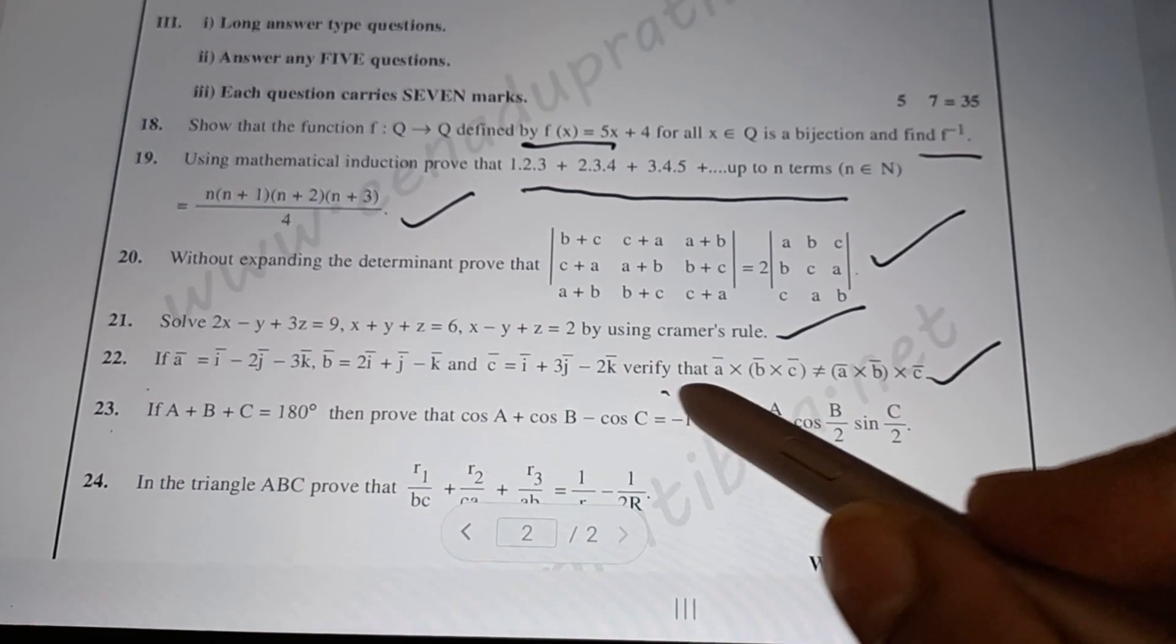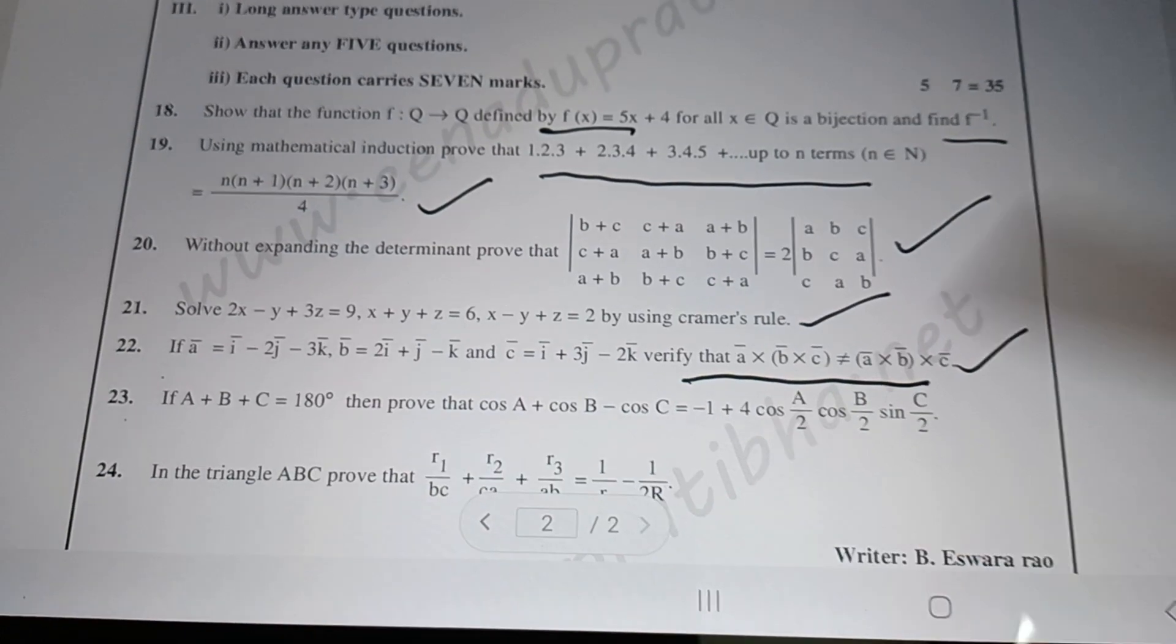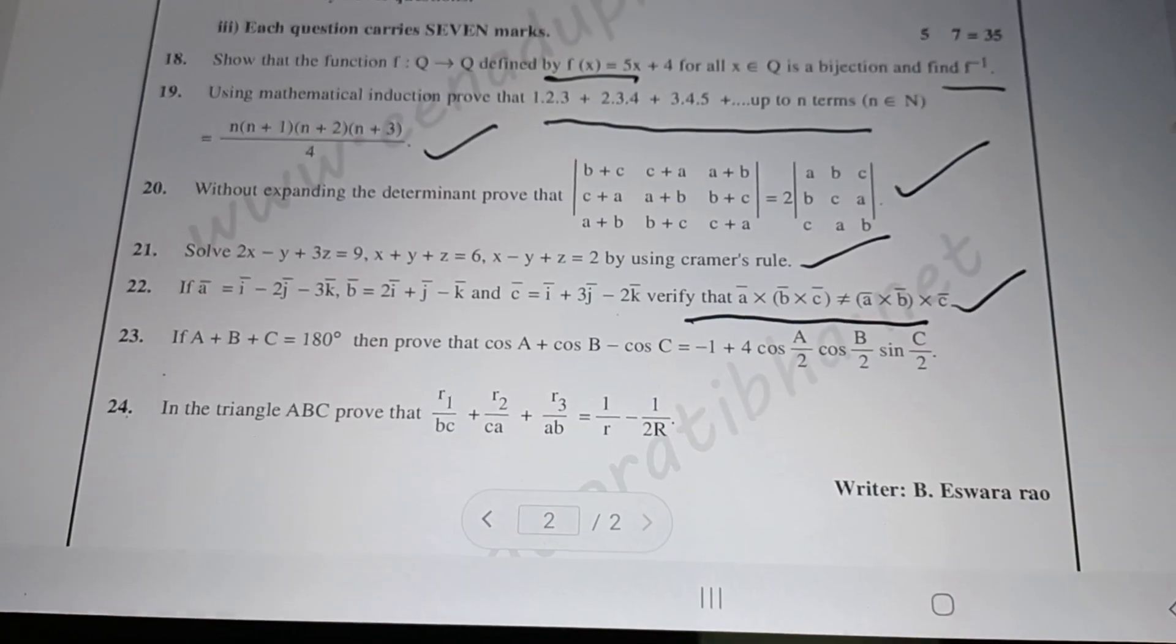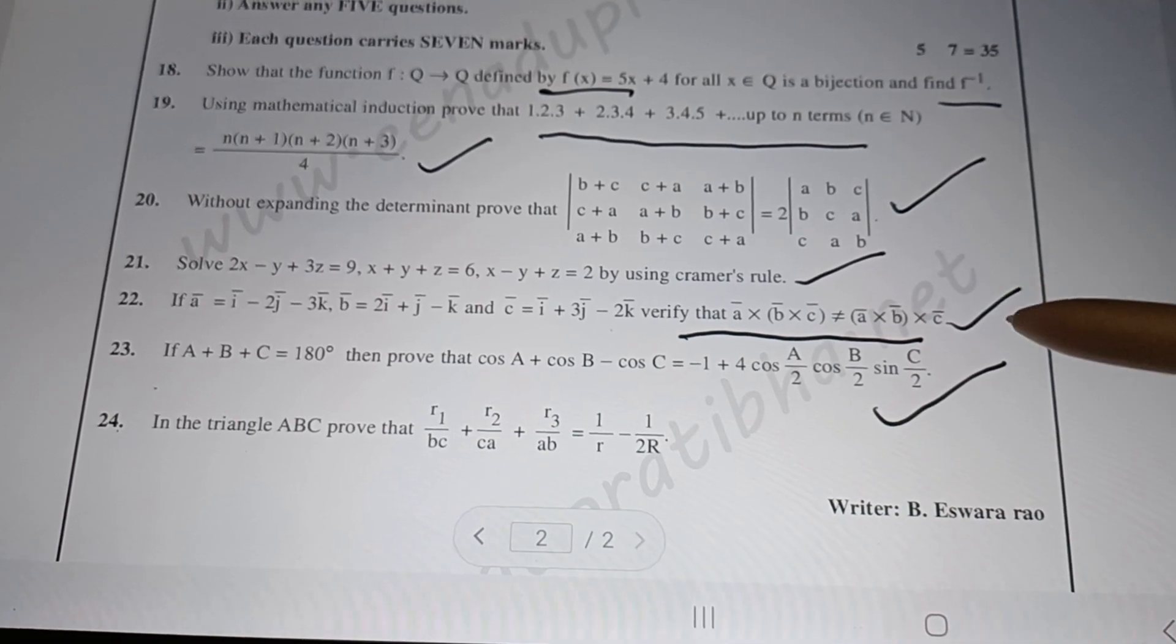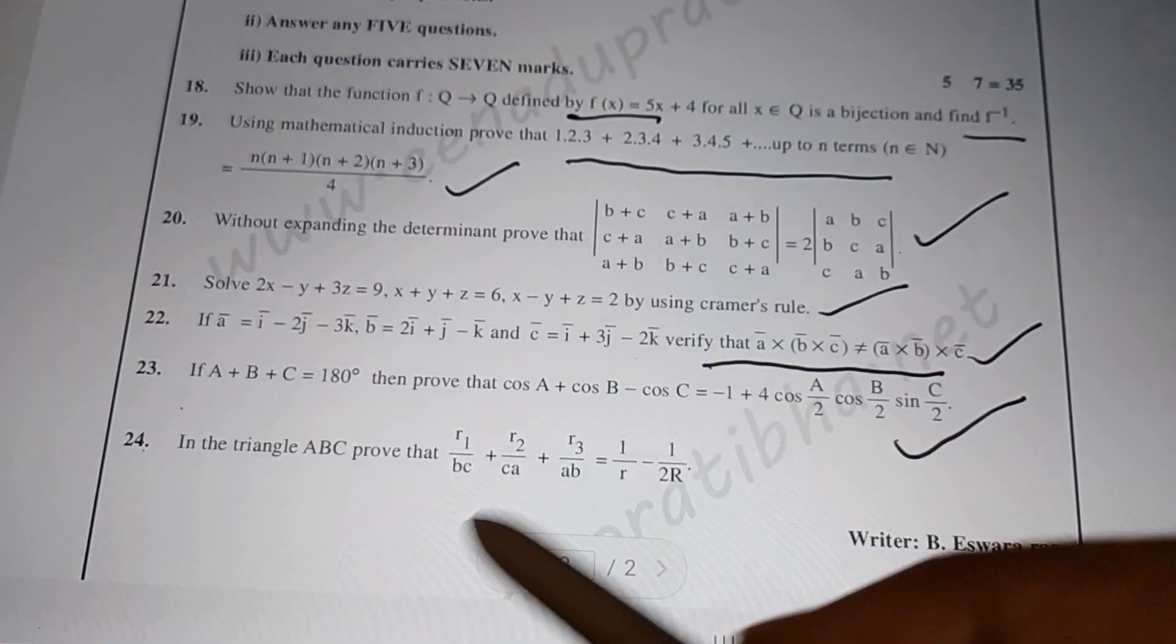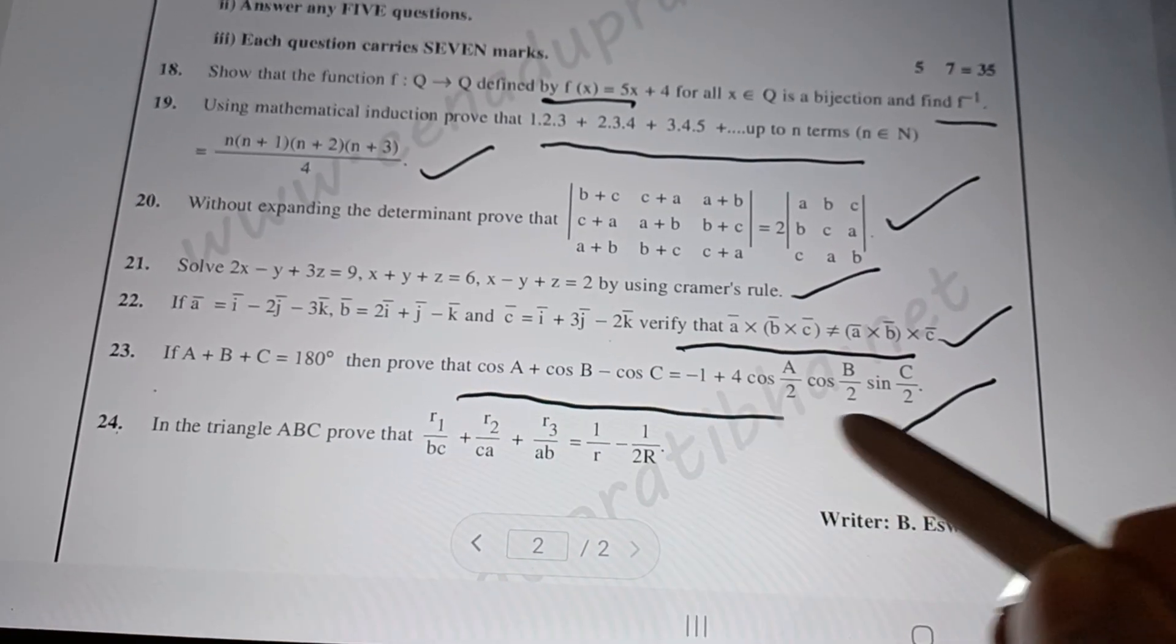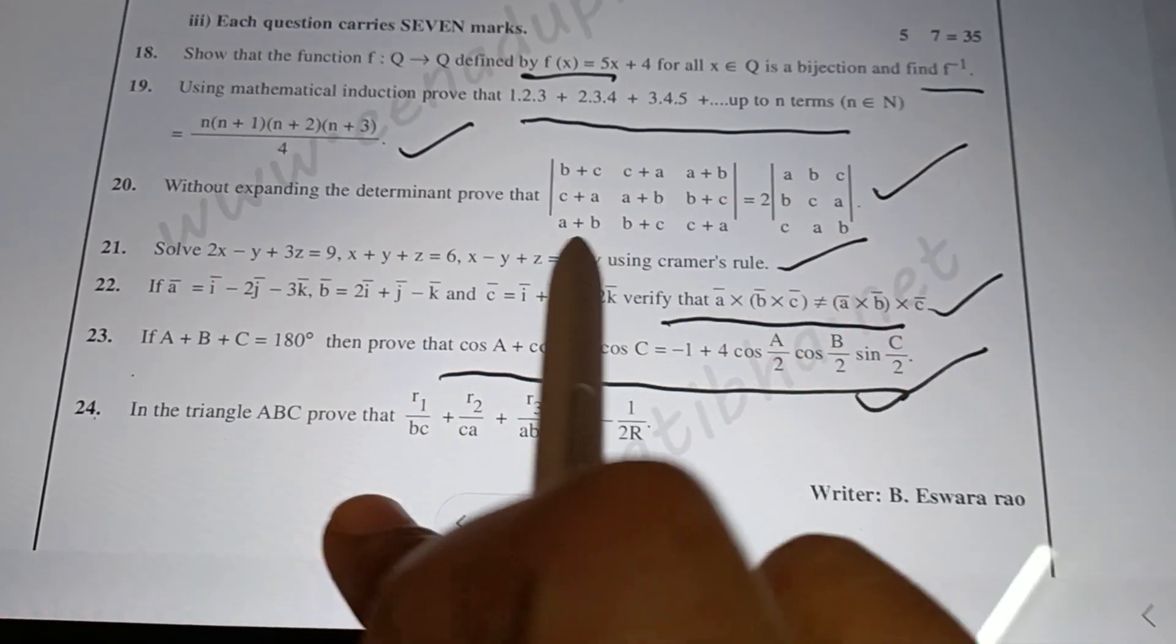Question 22 is on vectors - product of vectors is compulsory. Questions 23 and 24 are on 3D geometry, covering topics like 6D, 6E - these questions are compulsory.